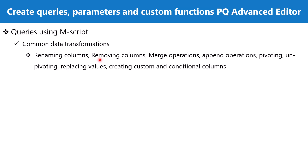Common M functions are used in data extraction and transformations. Some of these common transformations include renaming columns, removing columns, merge operations for both columns and tables, append operations, pivoting and unpivoting, replacing values, creating custom and conditional columns, and many other such scenarios. We should be familiar with the names and syntax of the functions used in these transformations.